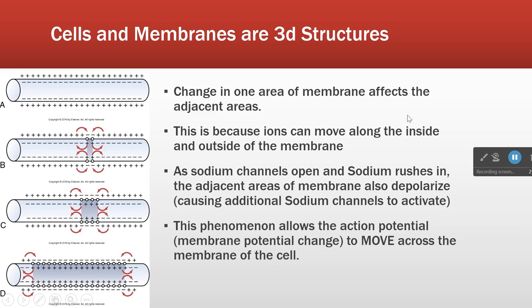To understand how the action potential moves in a real cell, we have to recognize that cells are 3D structures. Looking at part of the axon of a neuron at rest, we have a lot of positive charges outside and a lot of negative charges inside. The resting potential is about minus 70 to minus 90 — the sign tells you what the charge on the inside of the membrane is.